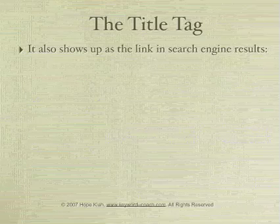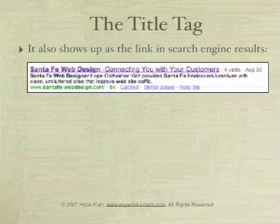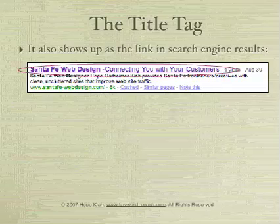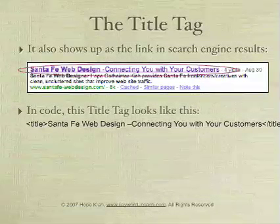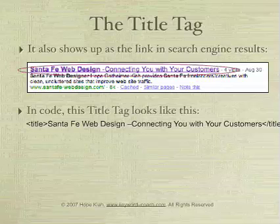The title tag also shows up as the link in search engine results. So if you do a search for santafe-webdesign, you find on page one of Google my link, and the title is santafe-webdesign-connecting-you-with-your-customers, showing up right there as a link in Google. In code, this is how the title tag looks — your web designer does know what to do if you give them the keyword phrase you want to use in your title tag and tell them that you want it there.